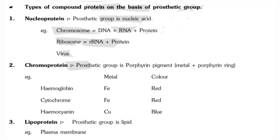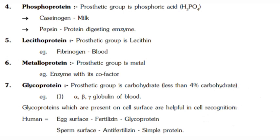Hemocyanin has copper as its metal ion. Lipoproteins have lipid as their prosthetic group and are generally seen in the plasma membrane or cell membrane. Phosphoproteins have phosphorus or phosphoric acid as their prosthetic group, with examples including caseinogen from milk and pepsin, a protein-digesting enzyme.